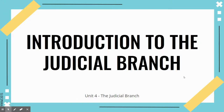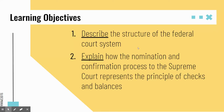Hi, folks. Welcome to your first video for Unit 4. Today we are going to start with our first branch of government, and that is the judicial branch. The focus of these next couple of units is going to be the interactions between the three branches of government — separation of powers and checks and balances. You have two objectives for this video: first, describe the structure of the federal court system, and second, explain how the nomination and confirmation process to the Supreme Court represents the principle of checks and balances.